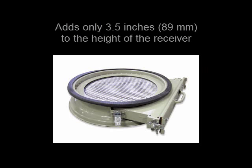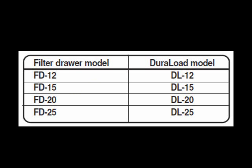The filter drawer adds only 3.5 inches, that is 89 millimeters, to the installed height of the receiver and is offered for popular Conair DuraLoad diameters DL12 through DL25.